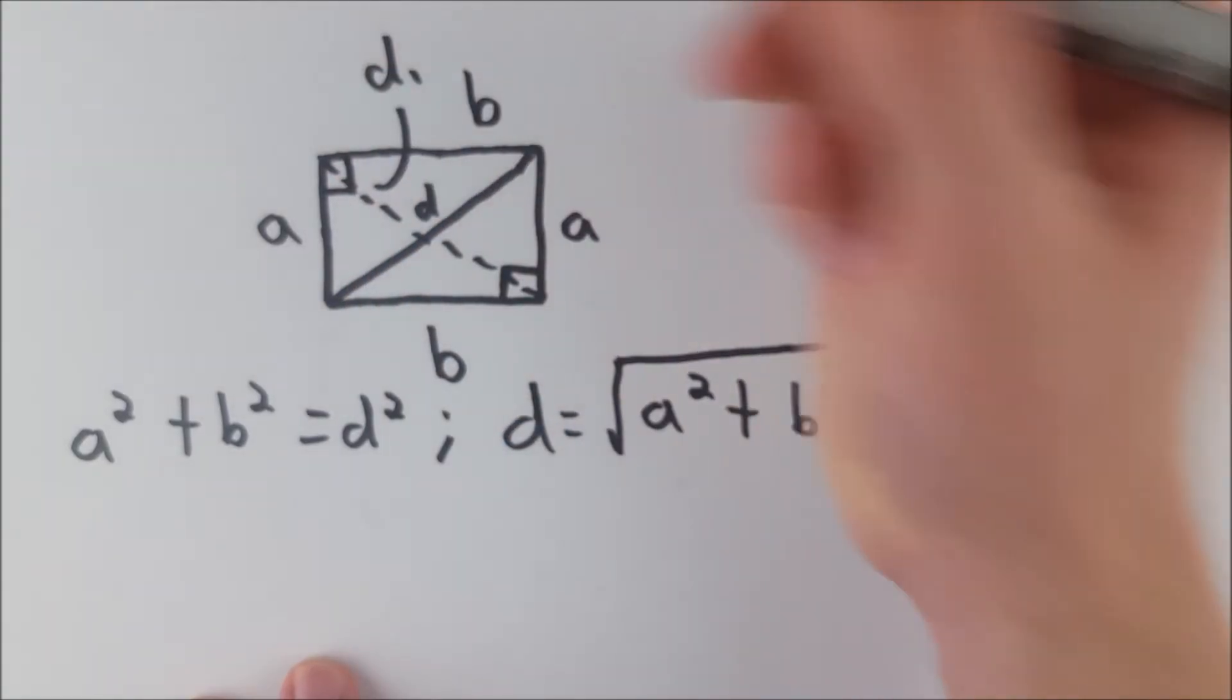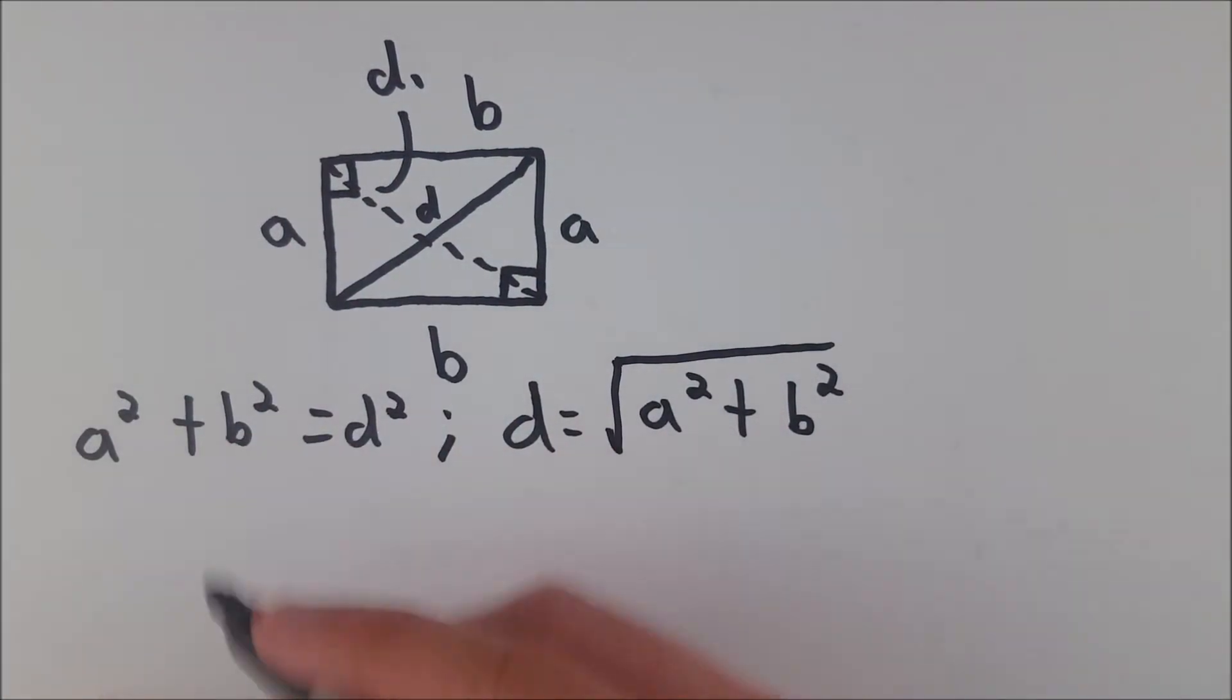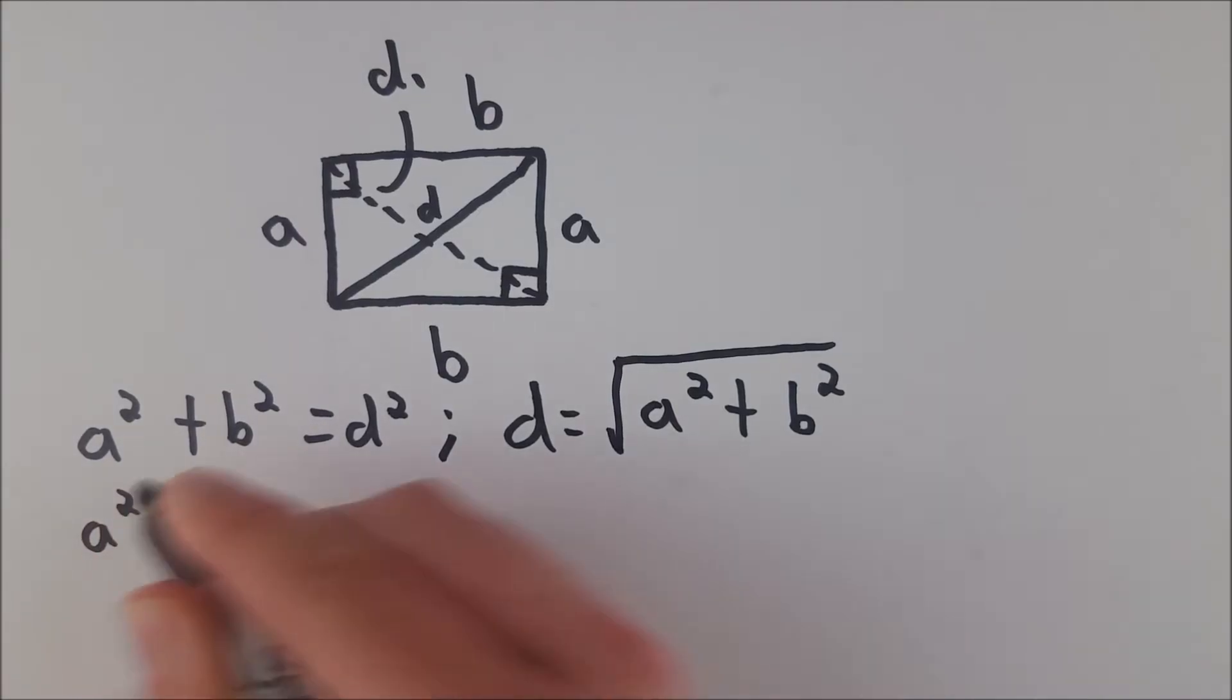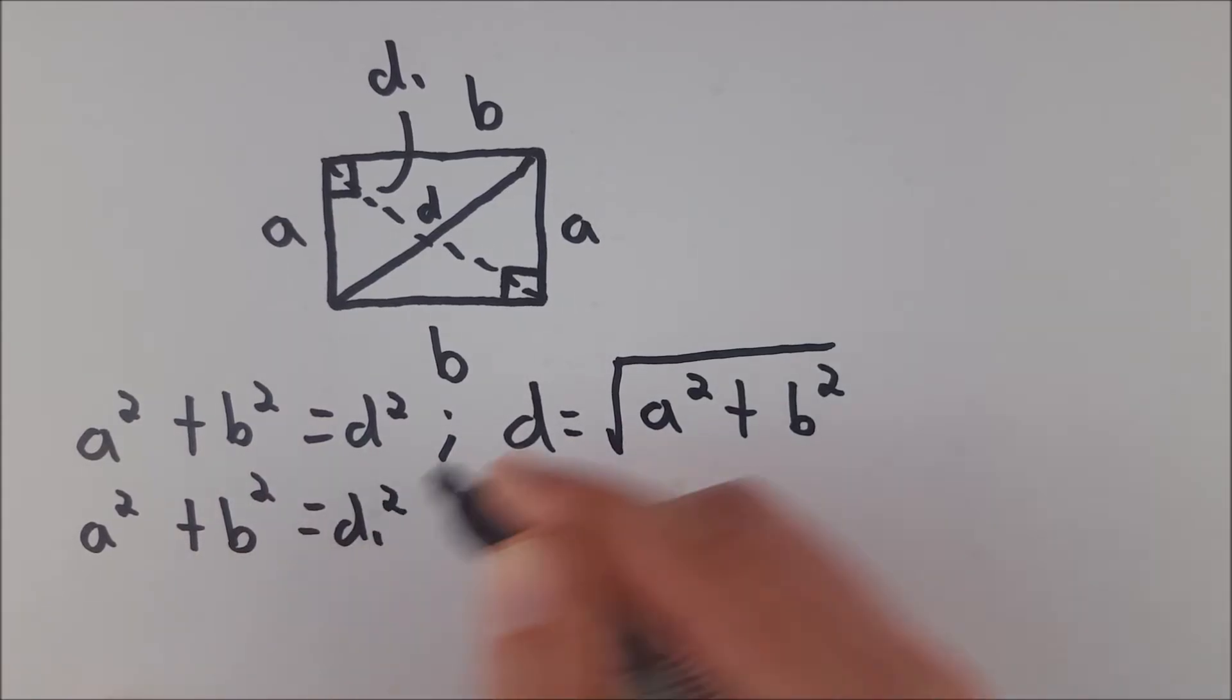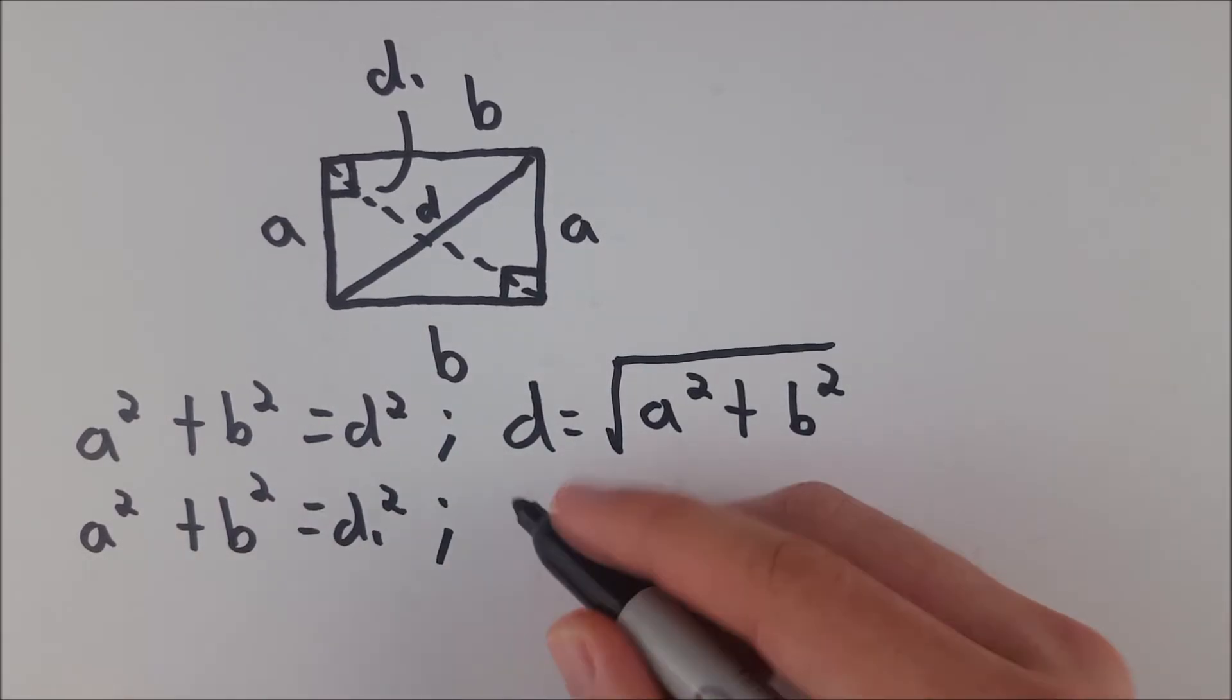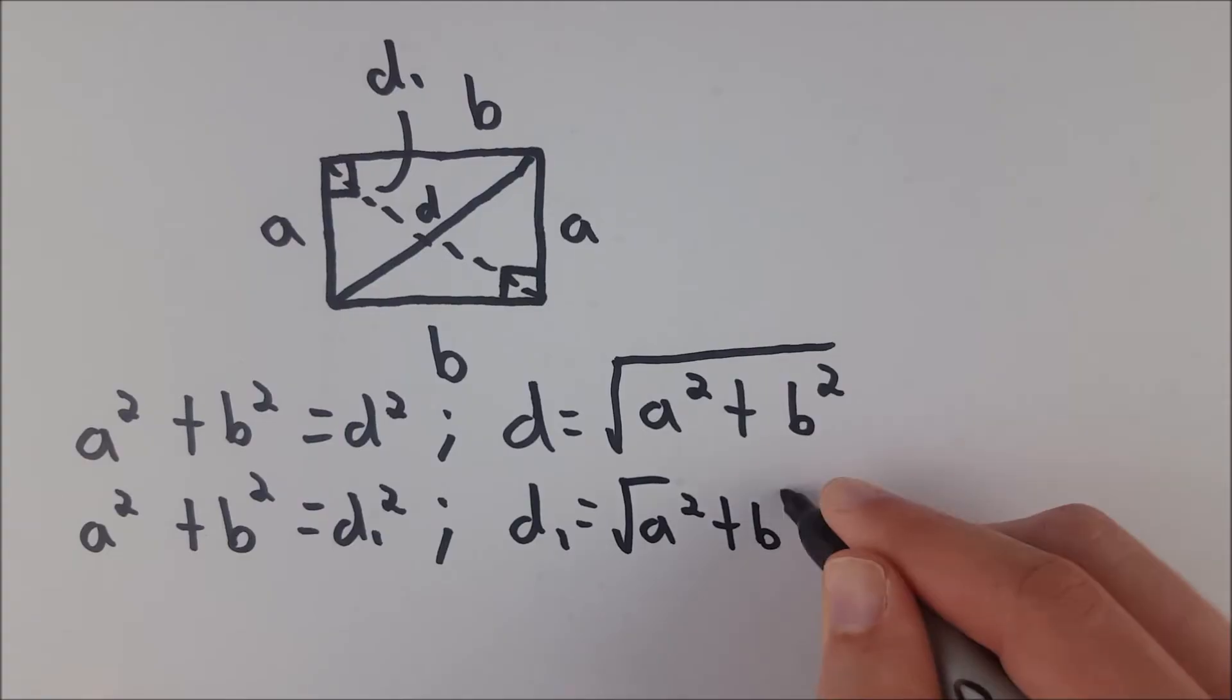So again, we've got a right triangle here with side lengths a and b, and so we know that d1, using the Pythagorean theorem, a squared plus b squared is equal to d1 squared, and then take the square root of both sides, and we get that d1 is equal to the square root of a squared plus b squared.